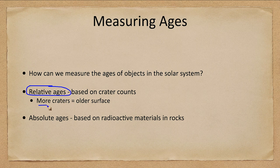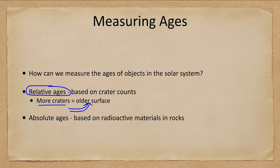Essentially, we look at more craters means it's an older surface. What that means in terms of older is how long it's been since that surface has been reworked. Planets that are subject to weathering effects and geological effects — volcanoes, etc. — those will be younger surfaces. The more craters we see, the longer that system has been unchanged, and that is the older surface.